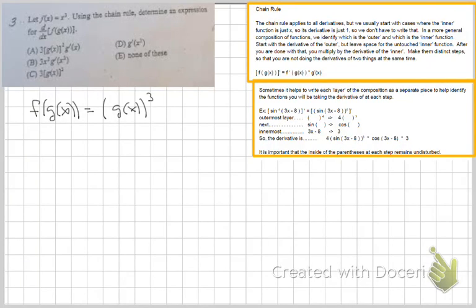If we go with the outside layer as something cubed and do the derivative of that, we get three times whatever was inside there squared. And g(x), when we do the derivative of that, gives us g'(x).